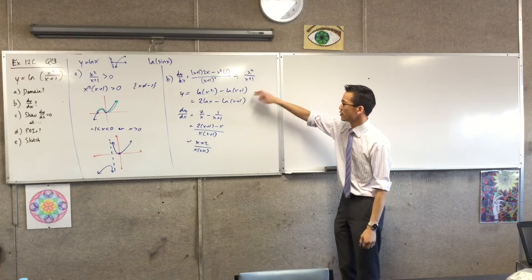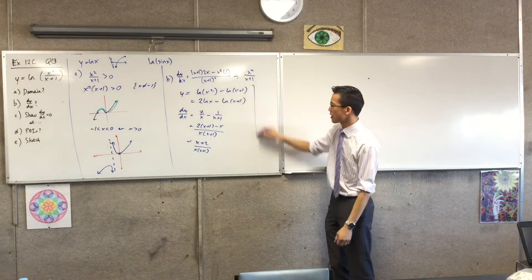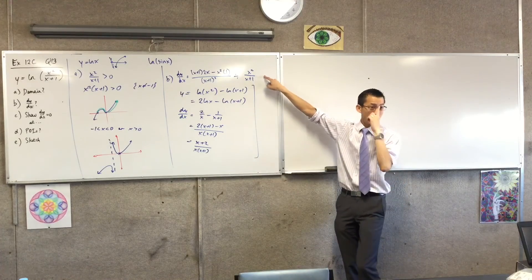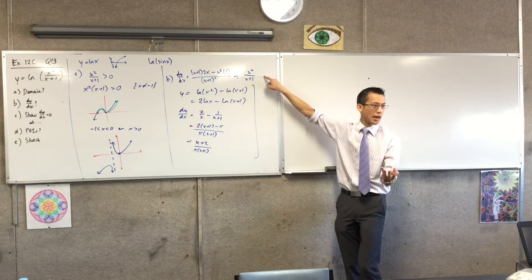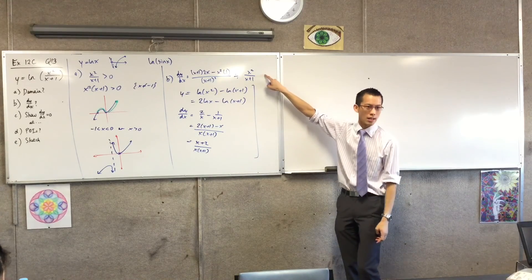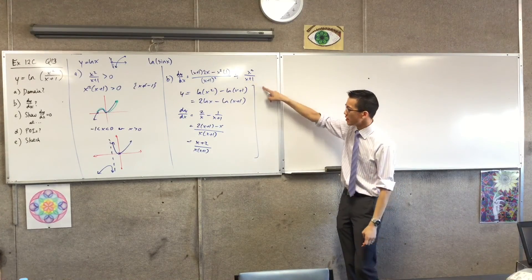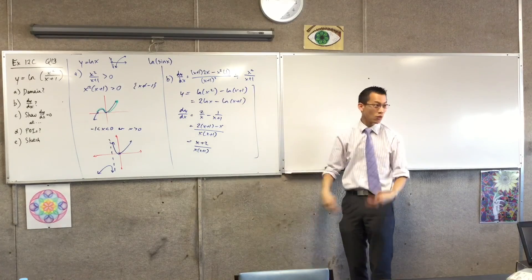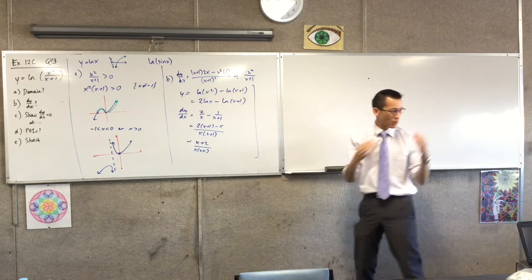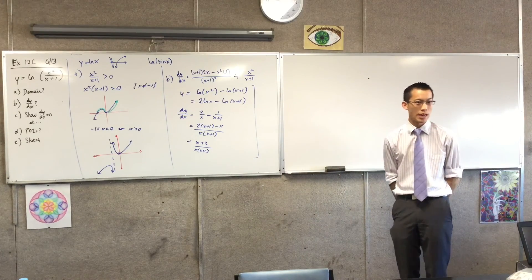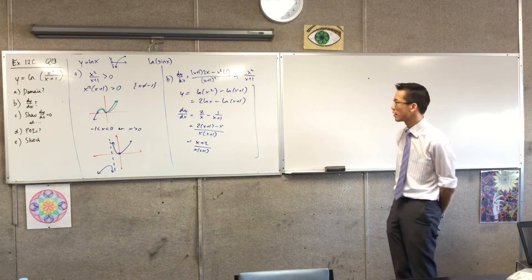Remember I said the quotient rule path took me four lines - and they were four hard lines. The log laws approach took one extra line, but they were all easy, quite minimal in terms of effort required.